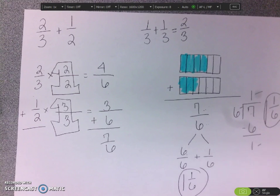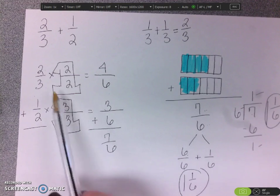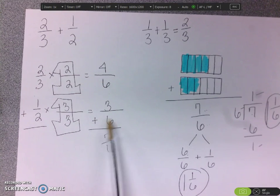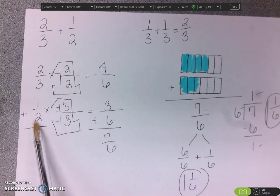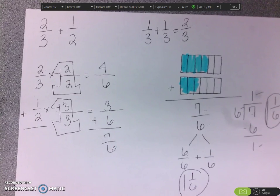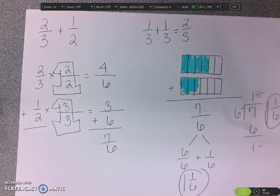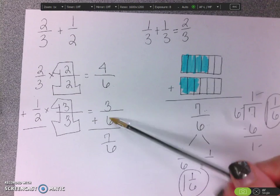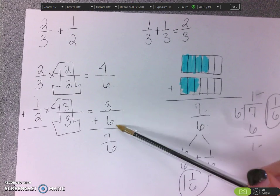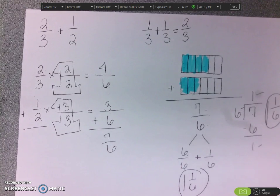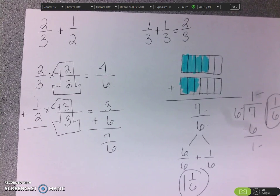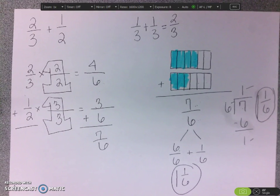The same thing. Remember, the most important part here is that we find out what the two denominators can both become. Because right now, when I look at this, I kind of think I have apples and oranges. You've got to make them fruit. You've got to make them have the same denominator. Okay? So that is how you add fractions with unlike denominators.